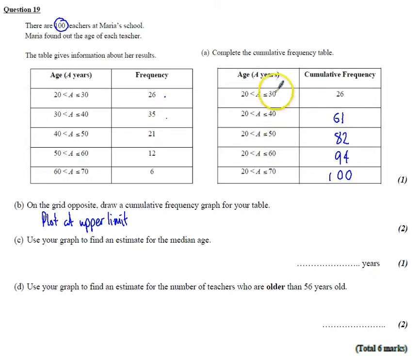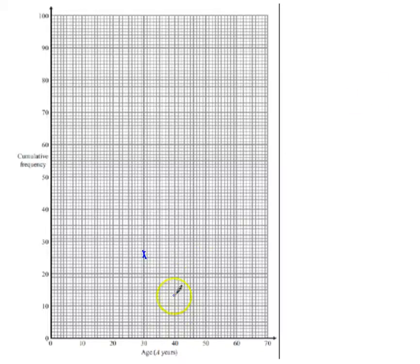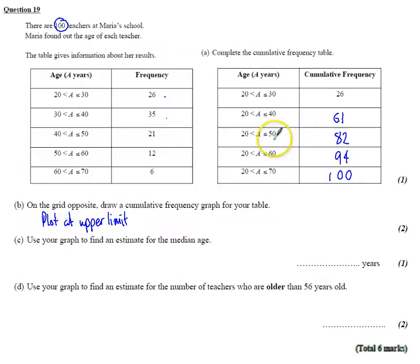So the first one I need to plot is at 30 I need to go up to 26. So on my grid here, my first group is 30, and I go up to 26. So 20, 1, 2, 3, 4, 5, 6. So as accurate as it possibly can be. At 40, I'm going to go to 61. At 40, follow this up. 60, 61 is just there.